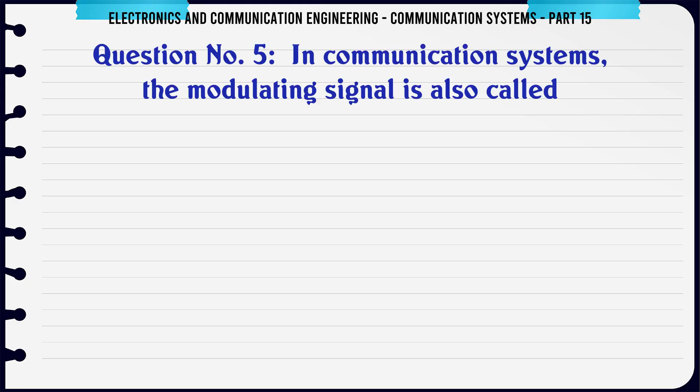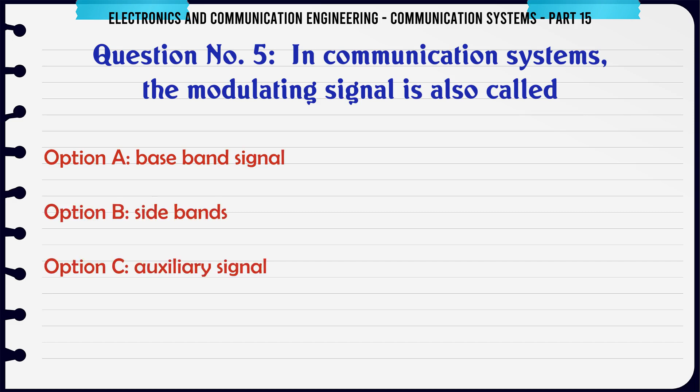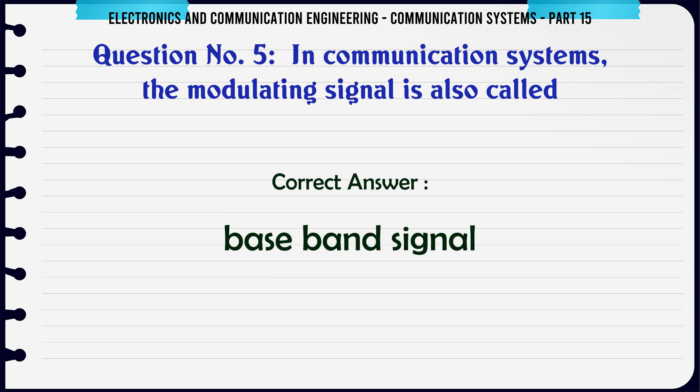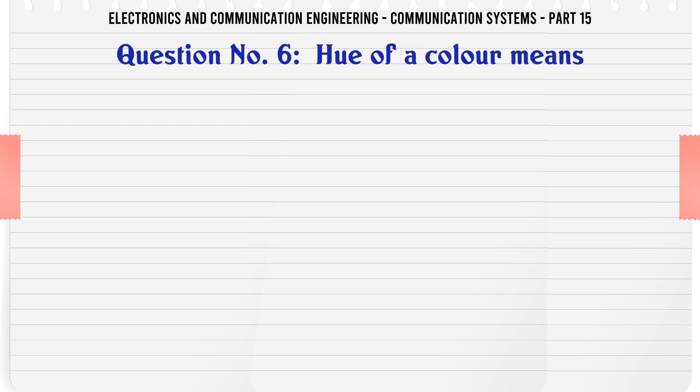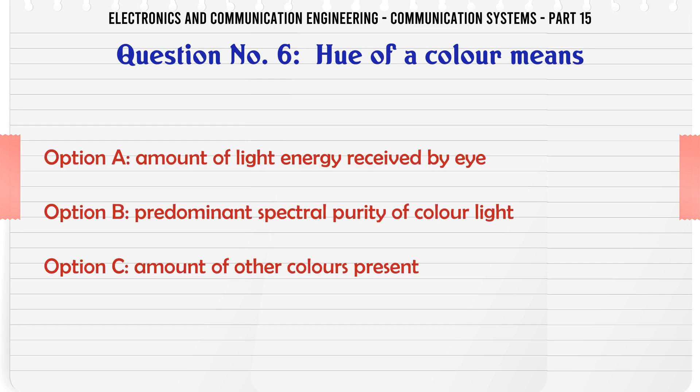In communication systems the modulating signal is also called: a base band signal, b side bands, c auxiliary signal, d none of the above. Options include: amount of light energy received by eye, predominant spectral purity of color light, amount of other colors present, none of the above.